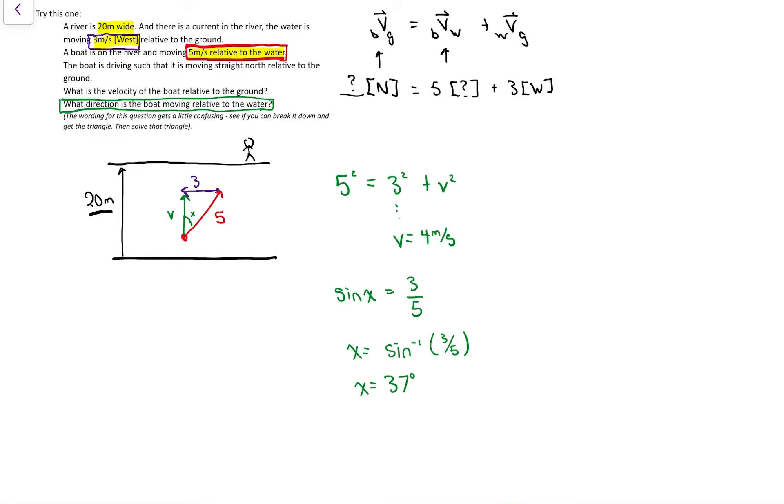So now I'm going to try and word this properly. The first question was, what is the velocity of the boat relative to the ground? So someone's standing on the ground, they're going to see the 4 meters per second. So relative to the ground, the people on the ground would see 4 meters per second and that's pointing straight north.